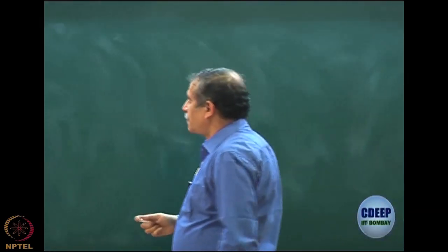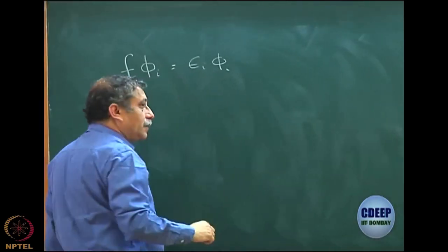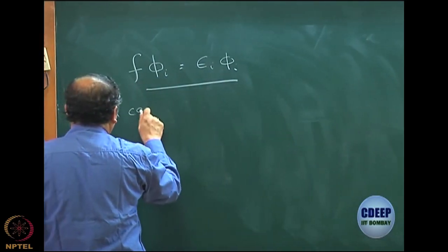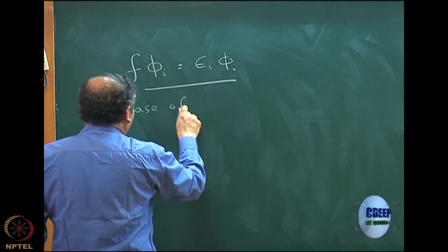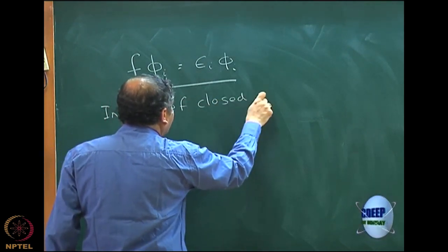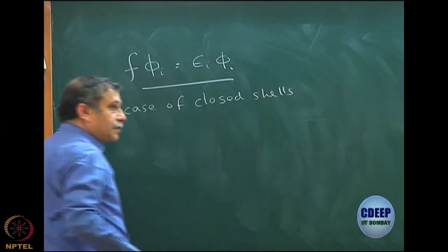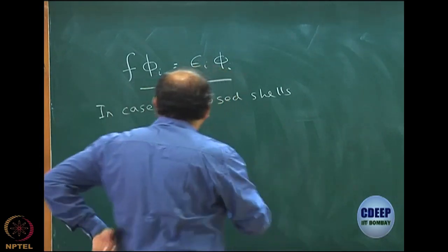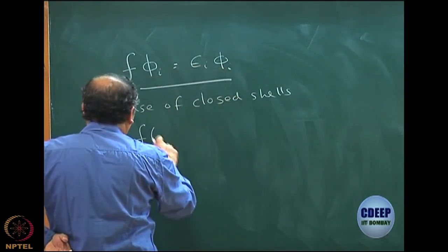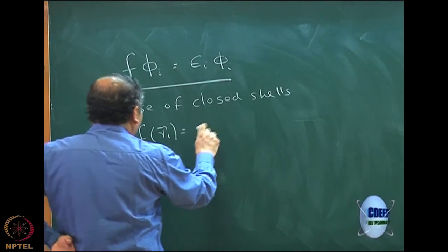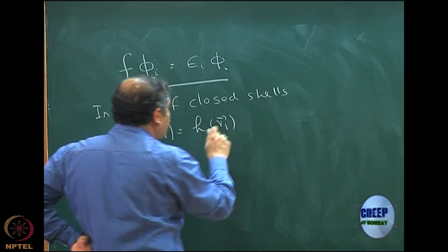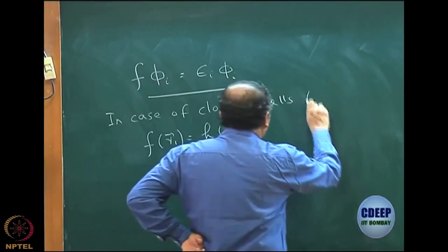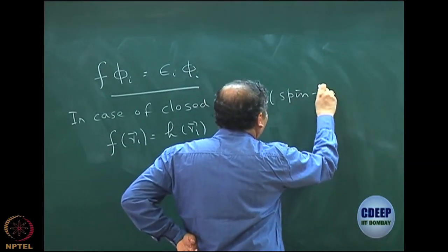This is the canonical Hartree-Fock equation for space orbitals, and in particular if it is closed shell, this form will depend on what kind of system it is. This is particularly for closed shell — you can get a single eigenvalue equation where f(r₁) is h(r₁). Please remember that now the spin is integrated, so this is only in terms of space orbitals. This is the spin-integrated equation for the closed shell.